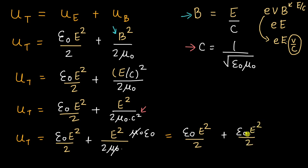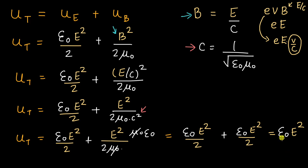What we see now is beautifully symmetric in electromagnetic waves — one field is contributing the same amount of energy as the other, and we know that one cannot even exist without the other. The total energy density therefore comes out to be ε₀E². We can also express this in terms of B by replacing E with cB, giving the total energy density entirely in terms of the magnetic field. The units of energy density would be joules per meter cubed.